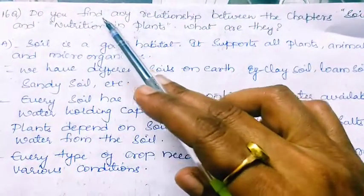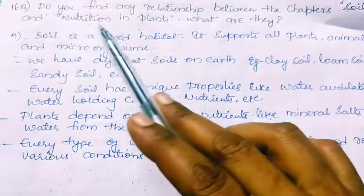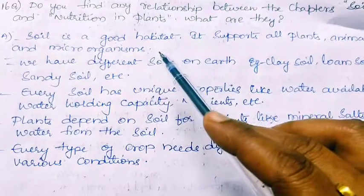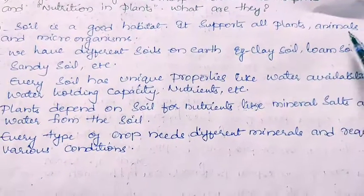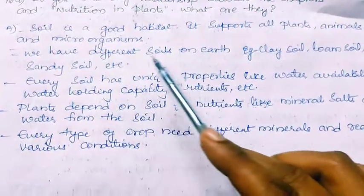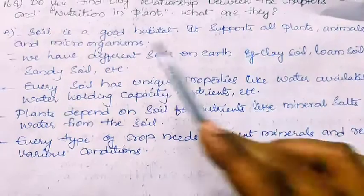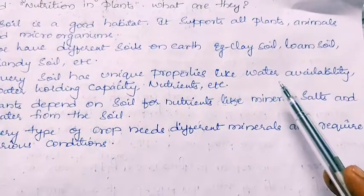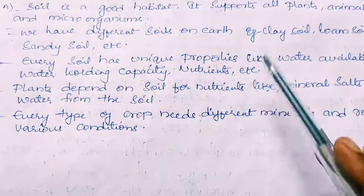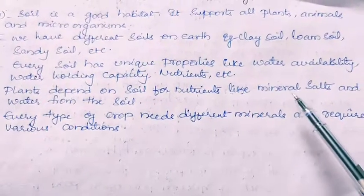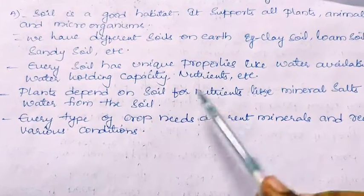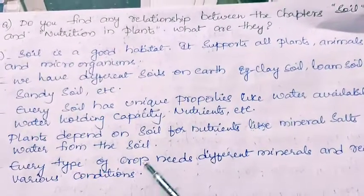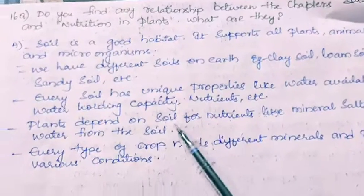Sixteenth question: Do you find any relationship between the chapters 'Soil' and 'Nutrition in Plants'? Yes, there is a relationship. Soil is a good habitat — it supports all plants, animals and microorganisms. We have different soils on earth like clay soil, loam soil, sandy soil, etc. Every soil has unique properties such as water availability, water holding capacity, and nutrients. Plants depend on soil for nutrients like mineral salts and water — they absorb nutrients and water from the soil. Every type of crop needs different minerals and various conditions, so there is a clear relationship between soil and nutrition in plants.